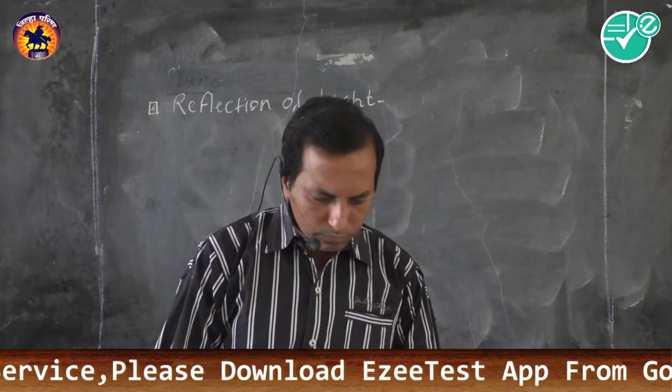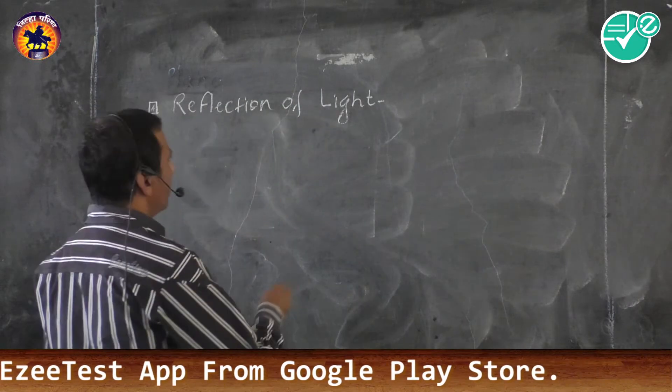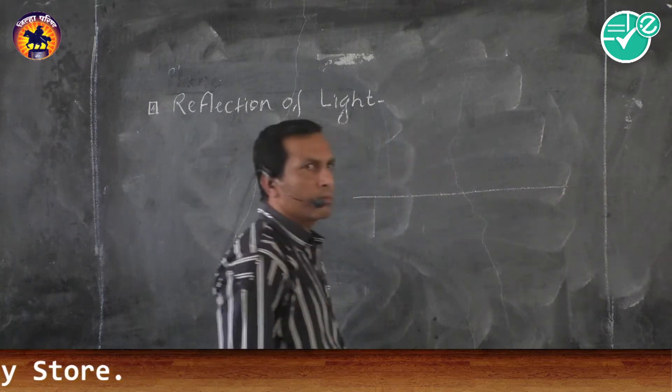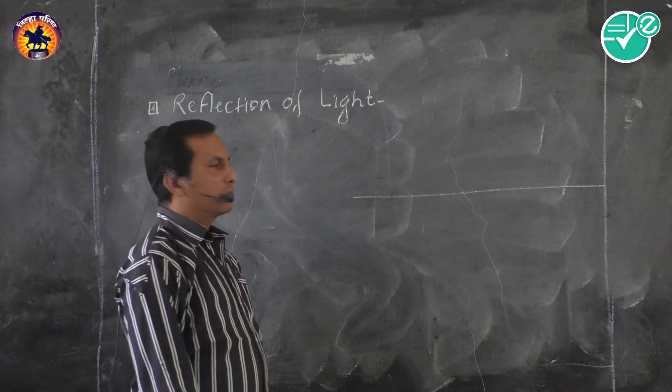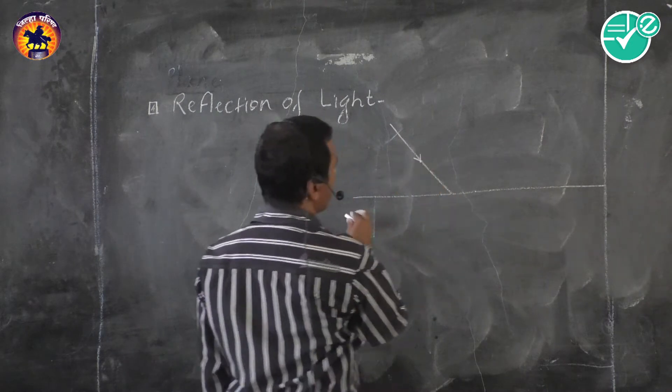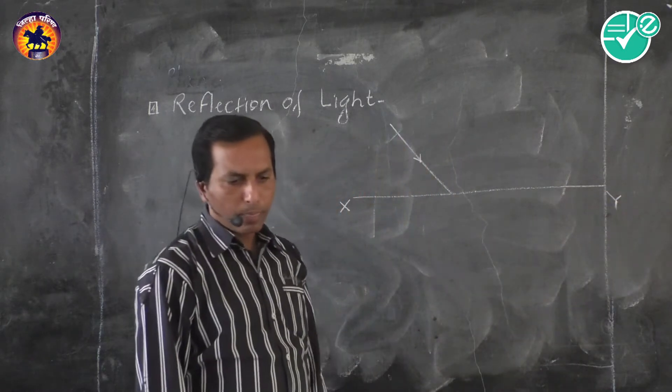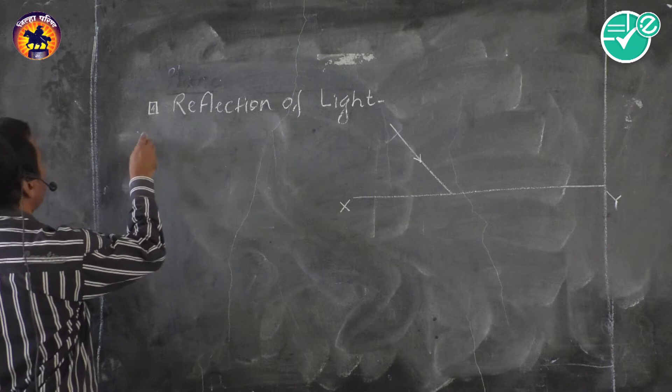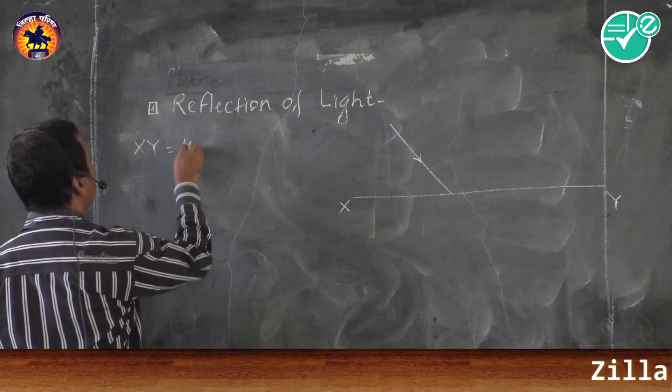Let us construct, let us draw a diagram. Again I am saying diagram is not in proper proportion. Suppose XY is a plane reflecting surface.